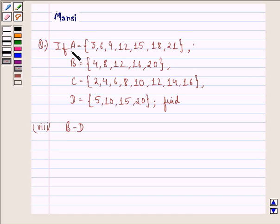The question says if A equals the set {3, 6, 9, 12, 15, 18, 21}, B equals the set {4, 8, 12, 16, 20},